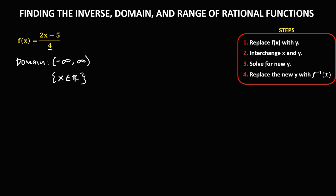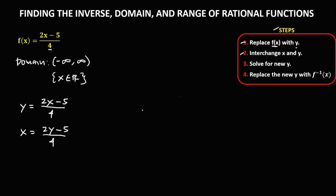Then to find the inverse, these are the steps. First, we replace f of x with y, so f(x) becomes y equals 2x minus 5 over 4. Then interchange x and y — so y becomes x, and x becomes y, giving x equals 2y minus 5 over 4.